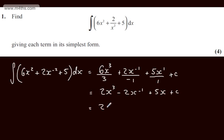This can be written as 2x cubed minus 2 over x plus 5x plus c. So either way round, four marks in total for question number one.